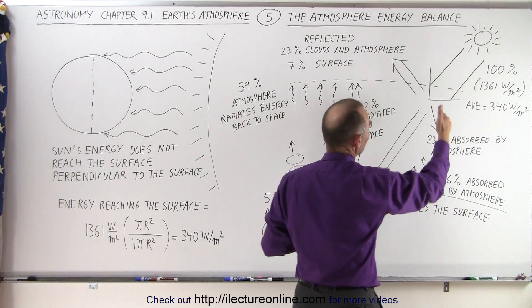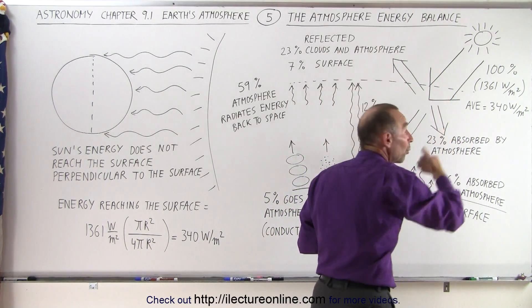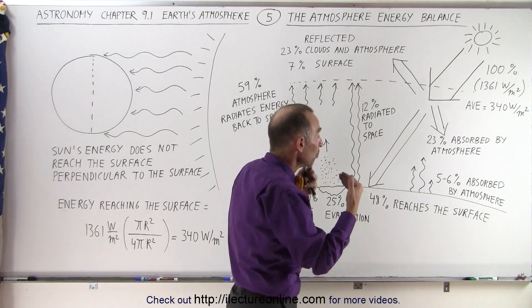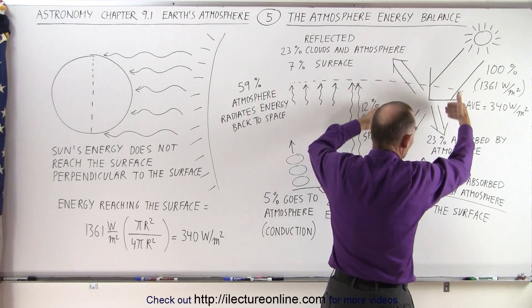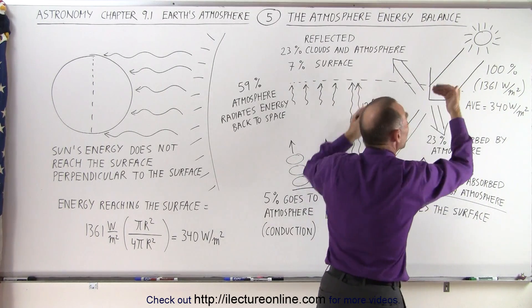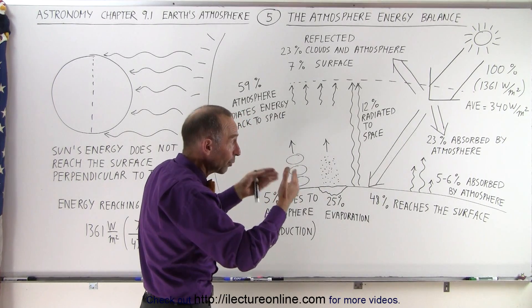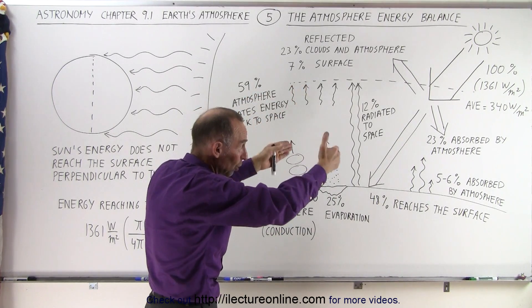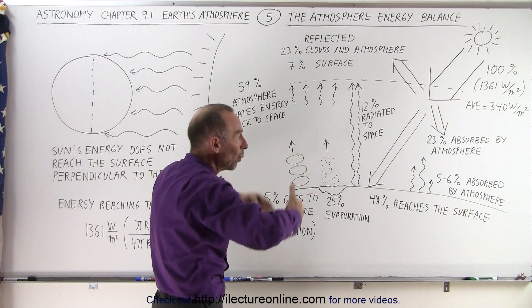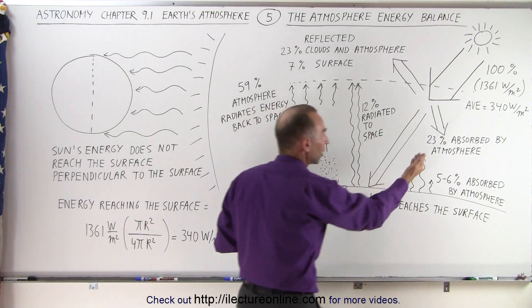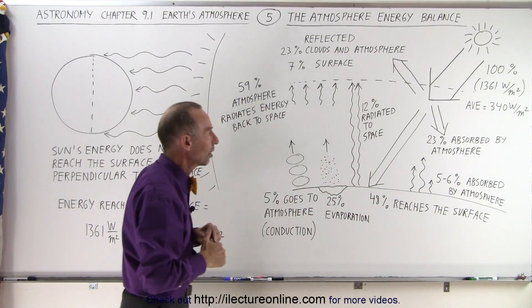The remainder — 23% of that — gets absorbed by the atmosphere on the way in. So it turns out that much more energy is absorbed by the atmosphere directly from the radiation coming from the sun on the way in, rather than on the way back out, which is a surprise for most people. So the majority of the energy absorbed from radiation is on the way in, by the molecules that absorb certain frequencies and wavelengths of the sun's energy.